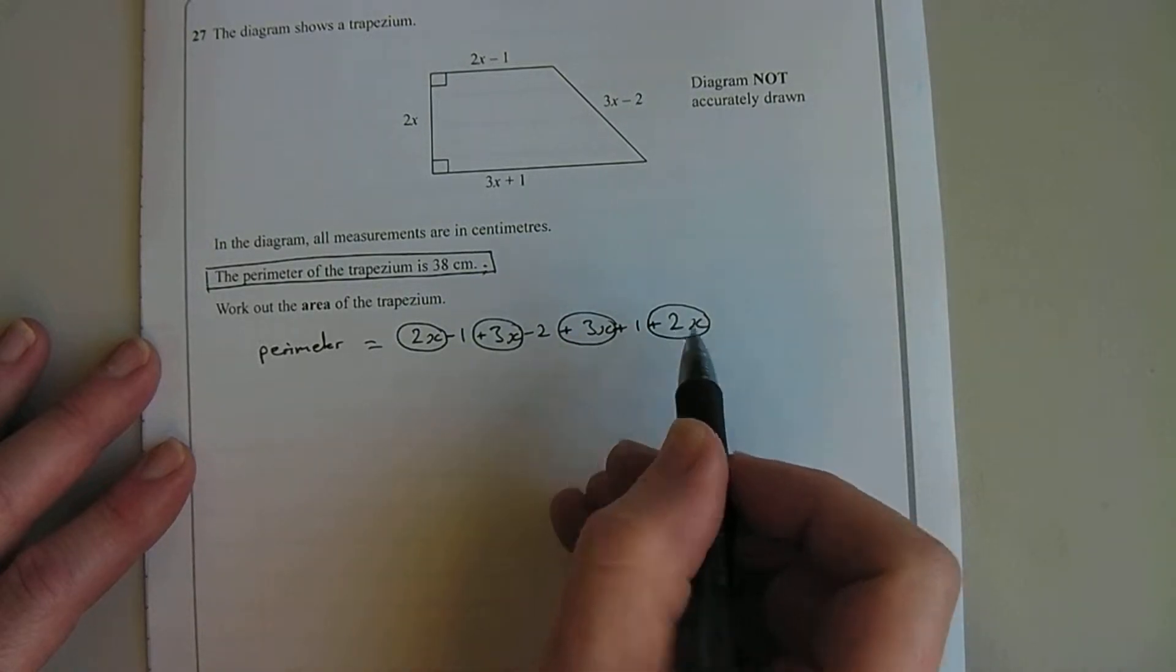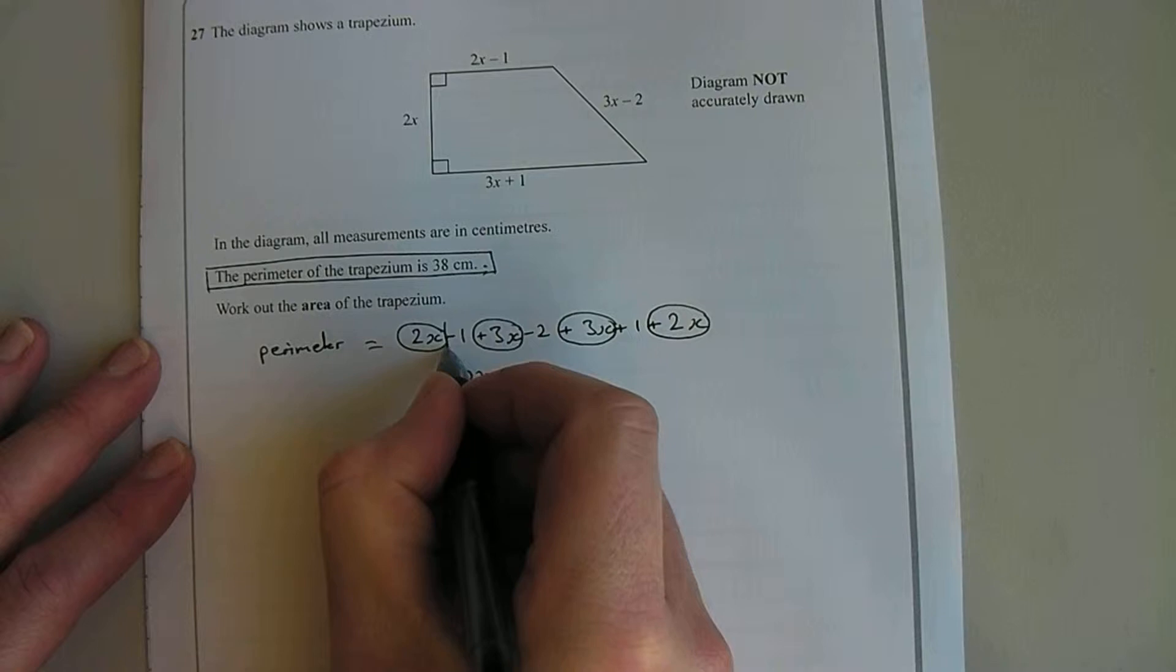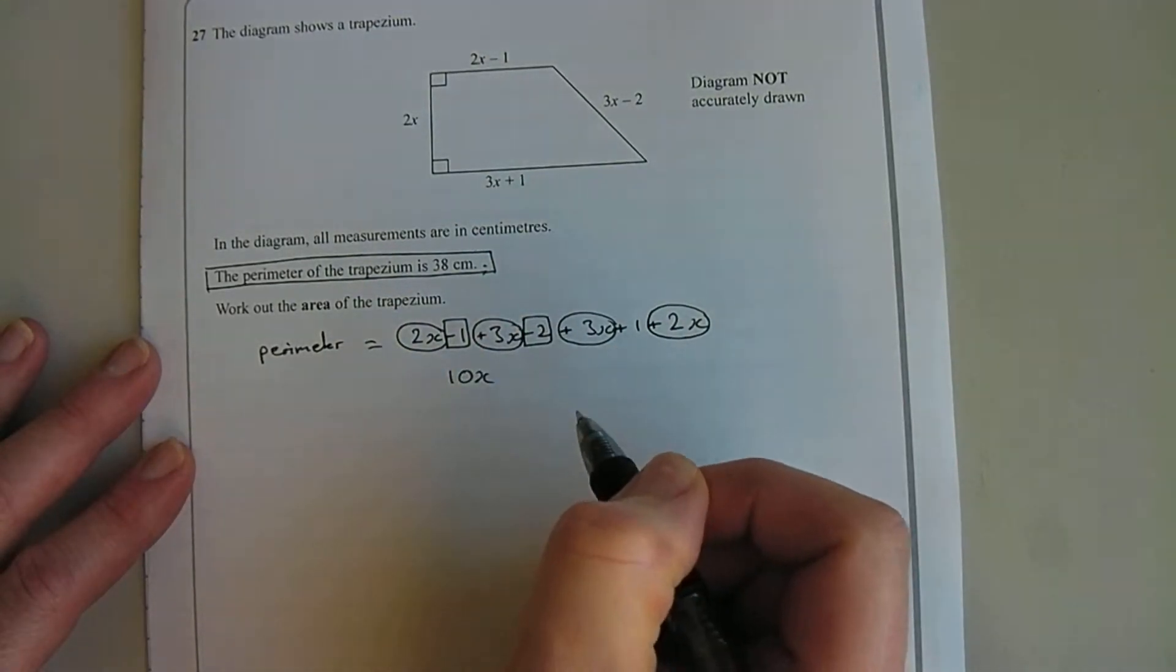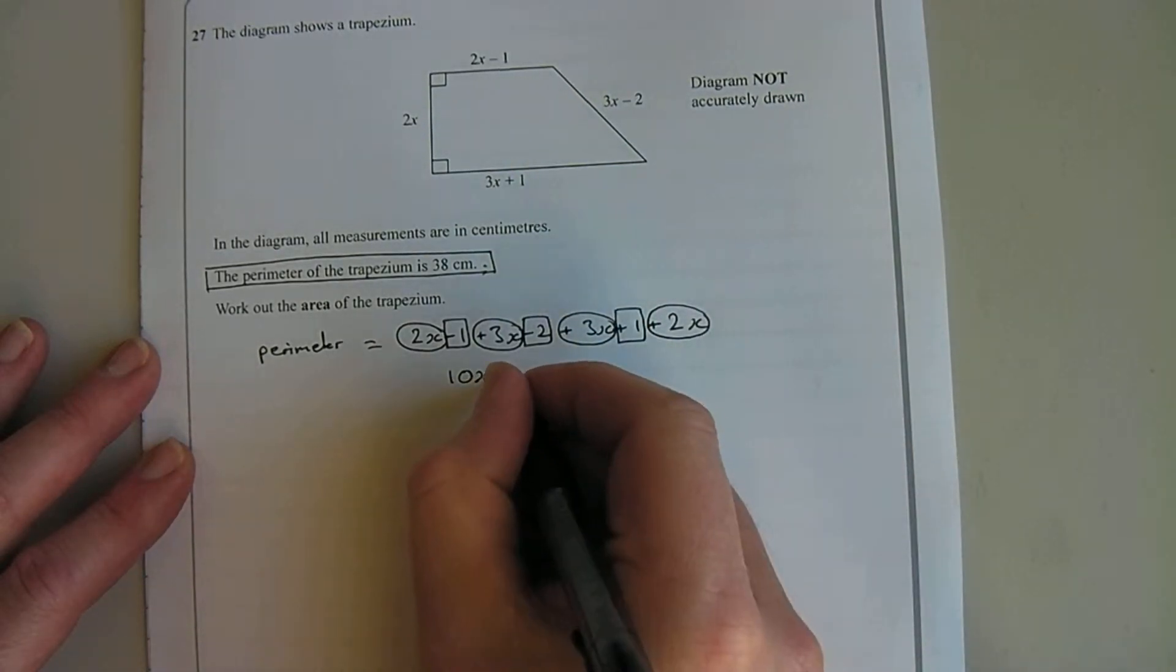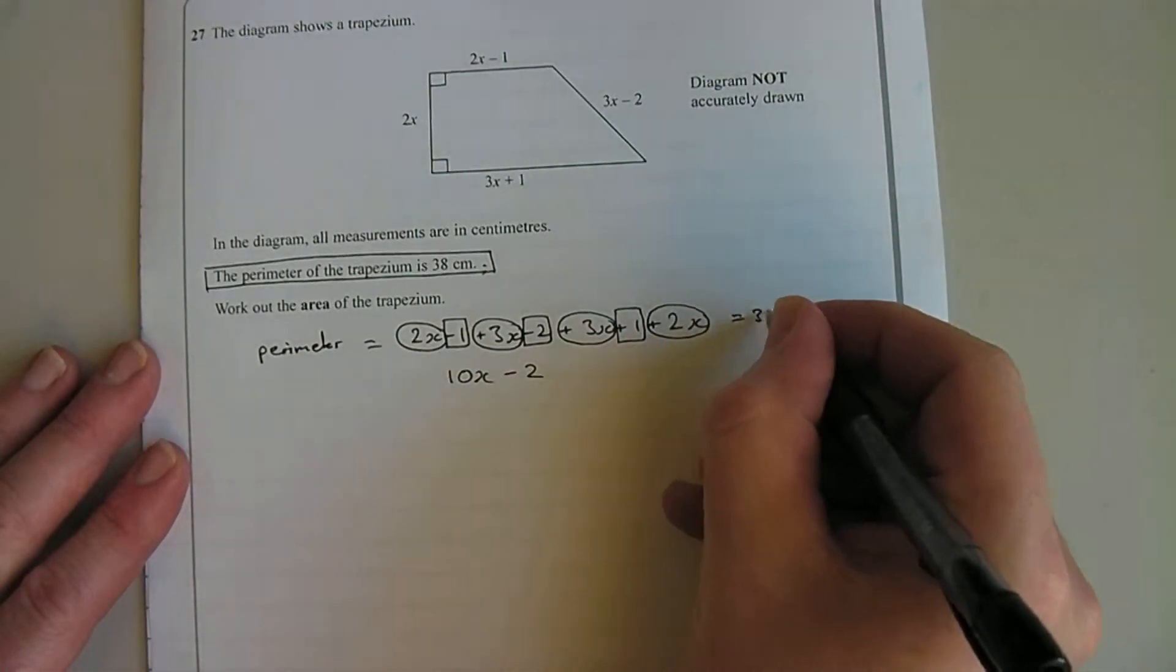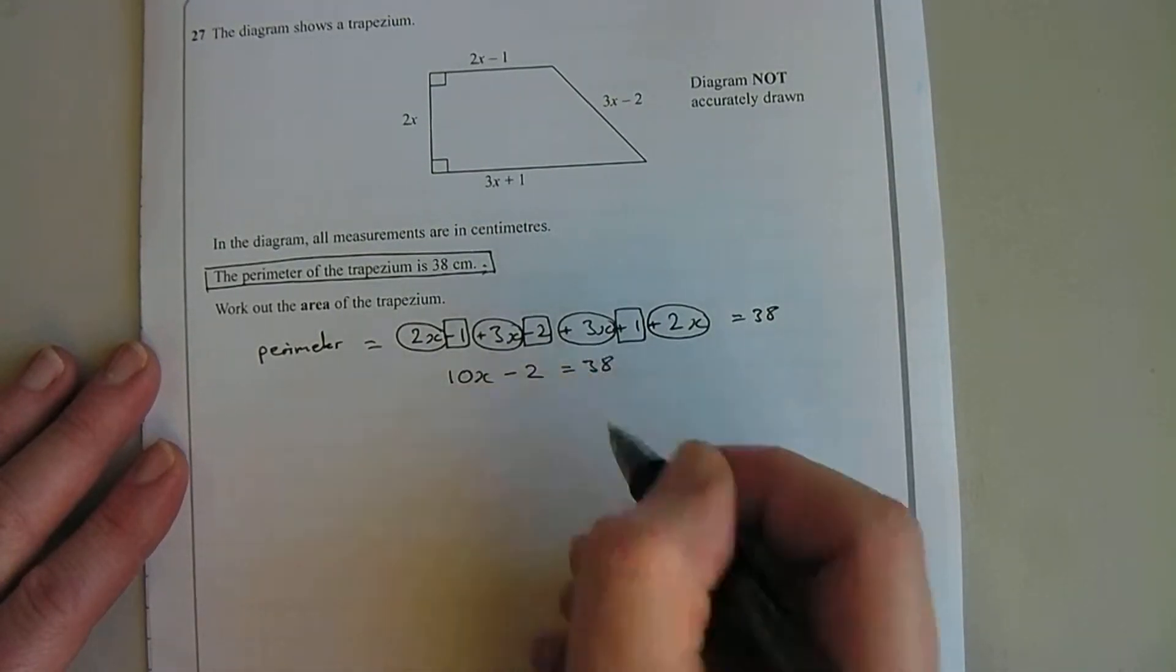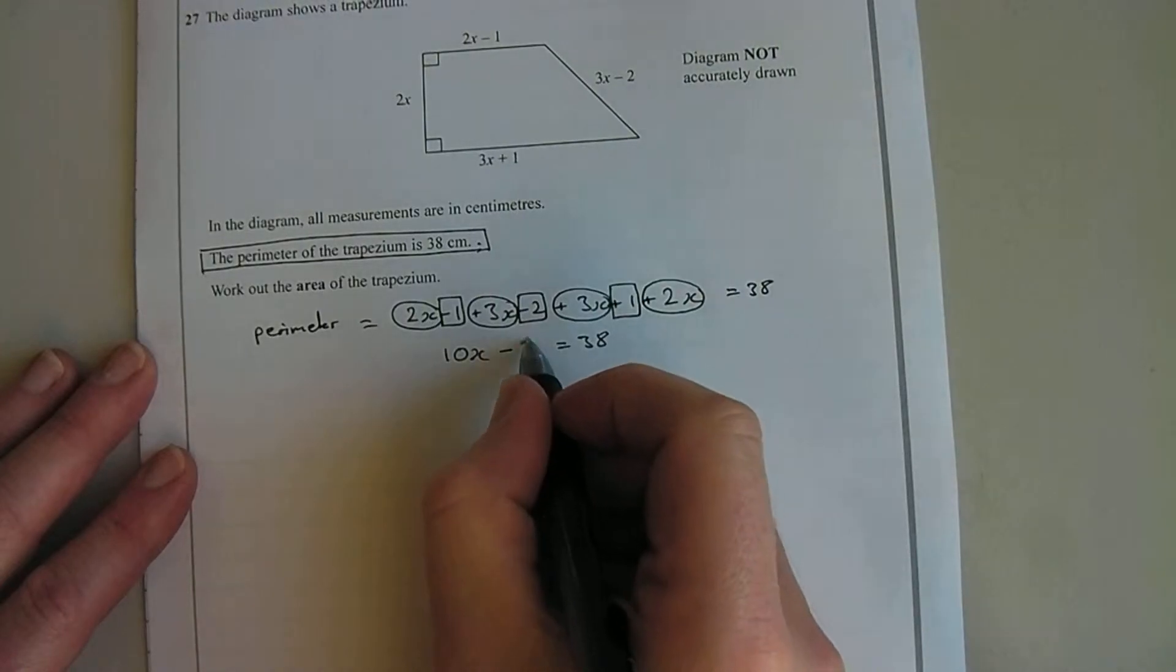And then we'll look at minus 1 minus 2 add 1, so that's going to come out at minus 2. So I now know the perimeter which equals 38 is 10x-2, which equals 38. So now I can rearrange this equation, we can take that 2 over to the other side and so it becomes a plus 2.